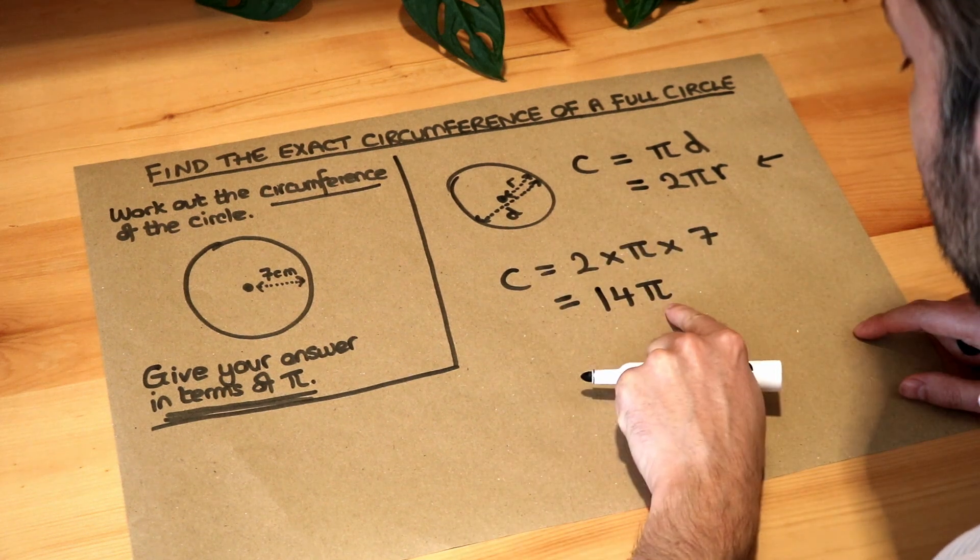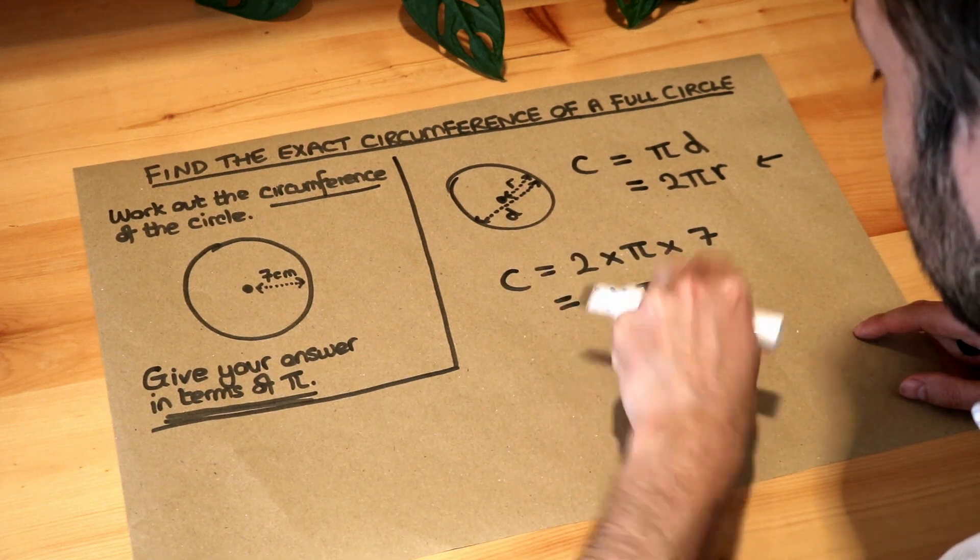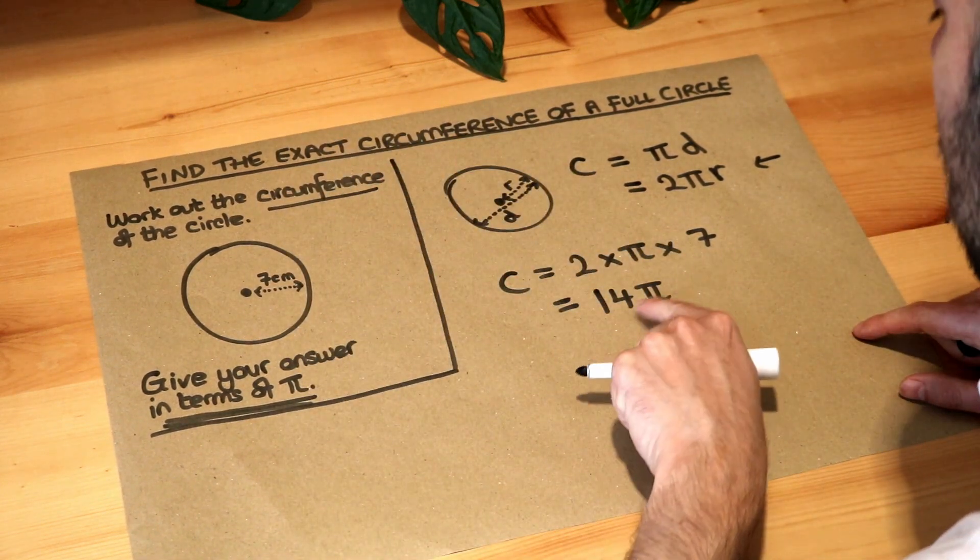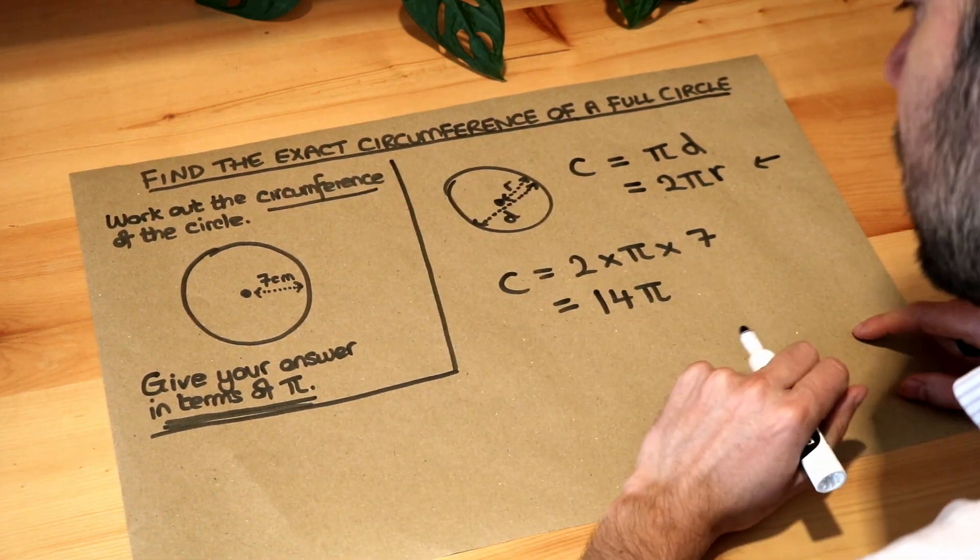We always put the number before the pi. So we would say 14 pi to mean 14 lots of pi or 14 times pi. We wouldn't write pi 14. That would look a bit strange.